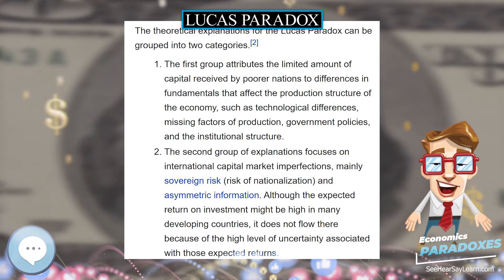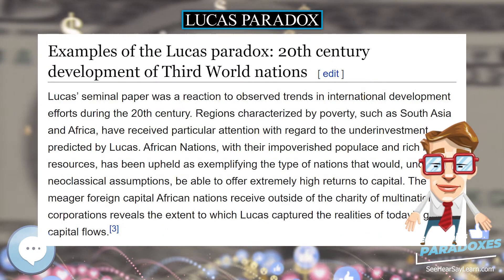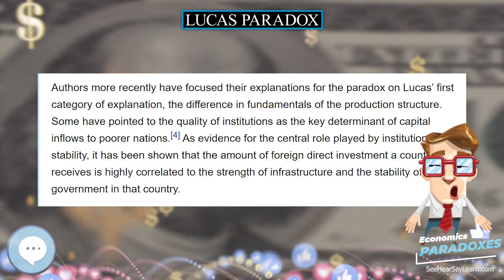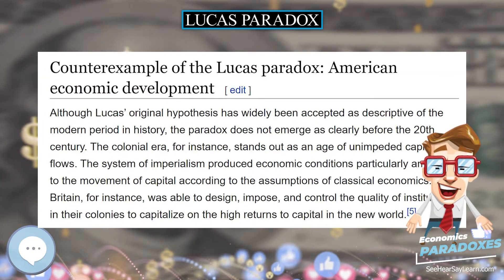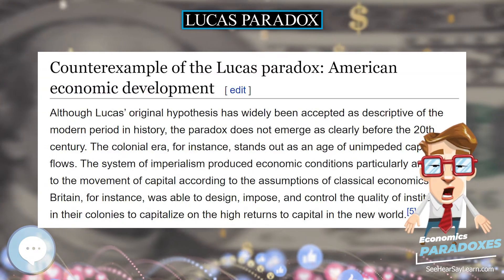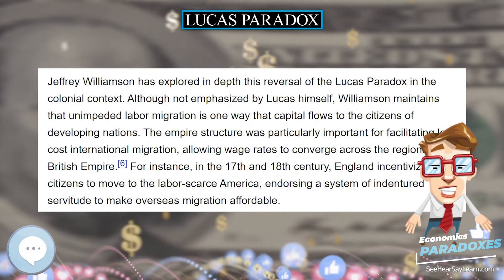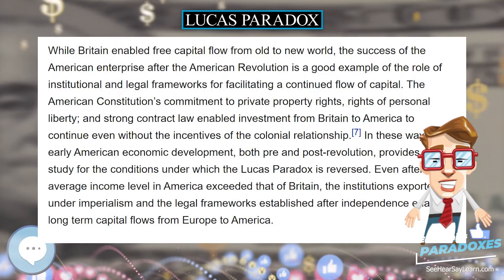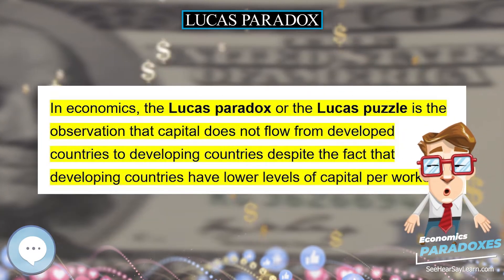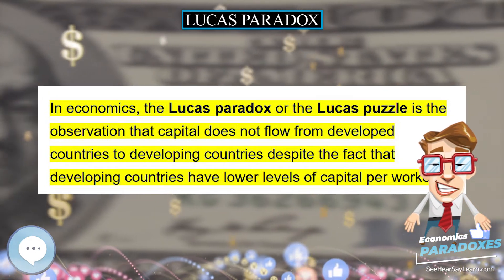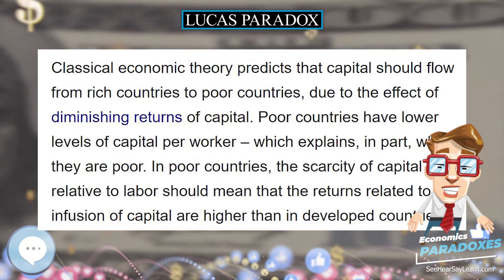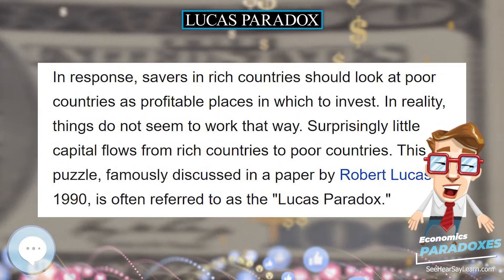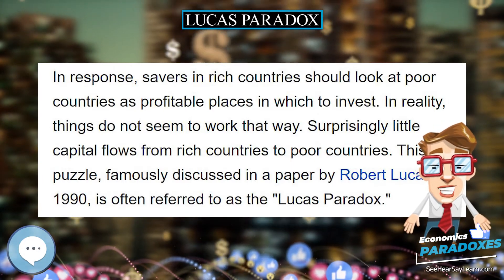Although Lucas' original hypothesis has widely been accepted as descriptive of the modern period in history, the paradox does not emerge as clearly before the 20th century. The colonial era, for instance, stands out as an age of unimpeded capital flows. The system of imperialism produced economic conditions particularly amenable to the movement of capital according to the assumptions of classical economics. Britain, for instance, was able to design, impose, and control the quality of institutions in their colonies to capitalize on the high returns to capital in the new world.